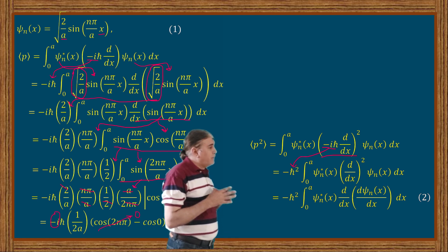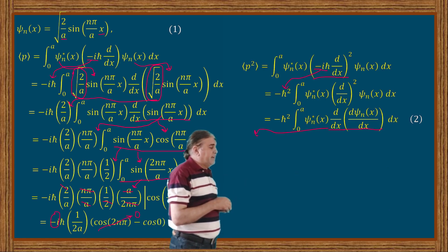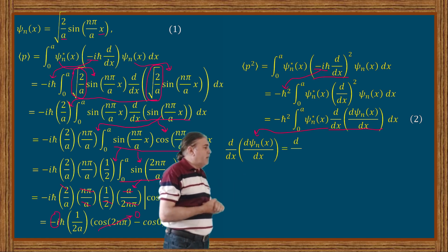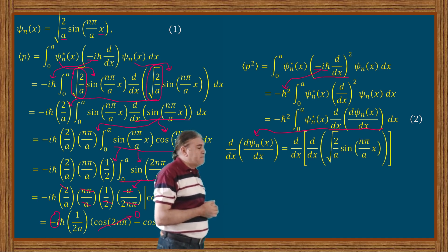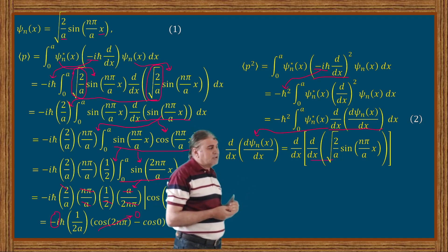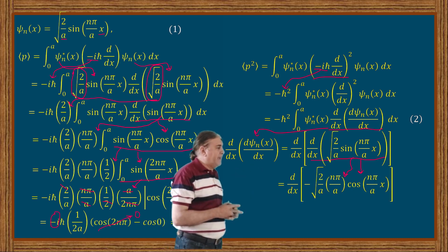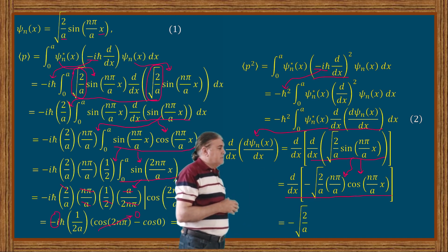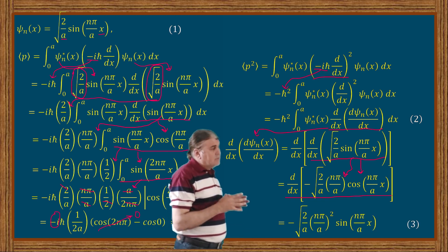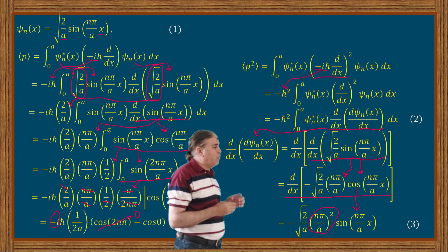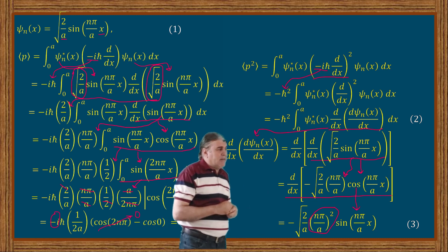Applying the derivative to the wave function: I find d/dx times d(psi N)/dx by substituting the value of the wave function. Taking the first derivative of the sine function produces a cosine function and extracts N pi divided by a from its argument, multiplied by the square root of 2 divided by a. Applying the derivative again to the cosine function extracts a negative sign, converts cosine into sine, and extracts another factor of N pi divided by a — making it the square of N pi divided by a. I call this equation 3.